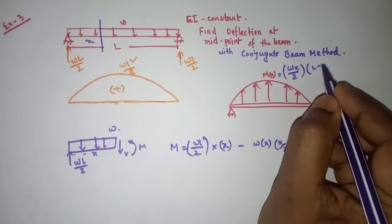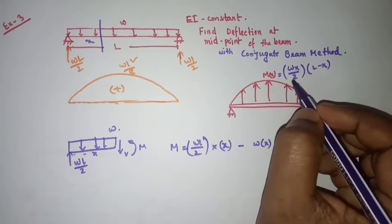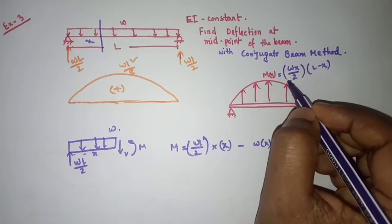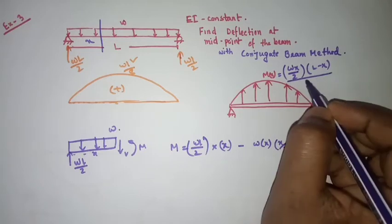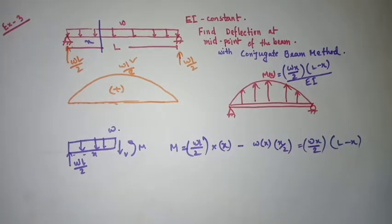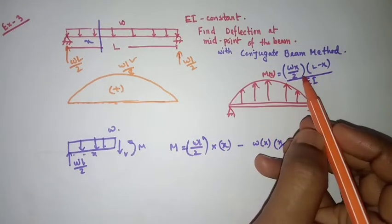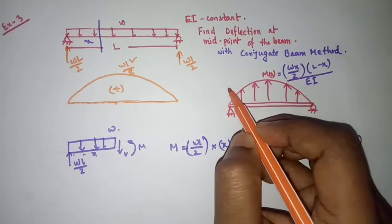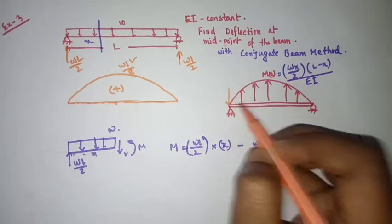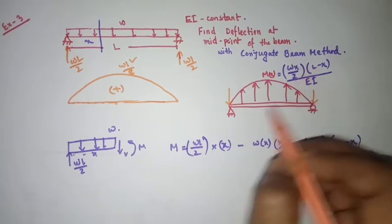So the moment is wx/2 times (L minus x), and you have to convert this one to M/EI format, so you divide this one by EI. This is the load at the conjugate beam. Now you have to find out the reactions.